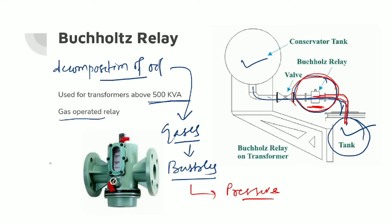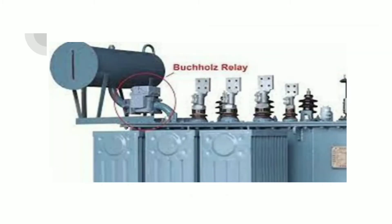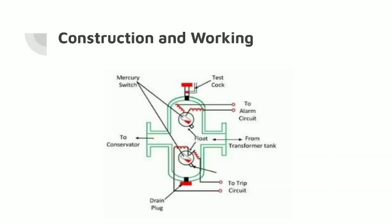You can see this is your commercial Buchholz Relay. Practically, this is the main tank and this is the conservator tank. This pipe is located in the Buchholz Relay — it connects the main tank and the conservator tank, and the Buchholz Relay is installed along this pipe.